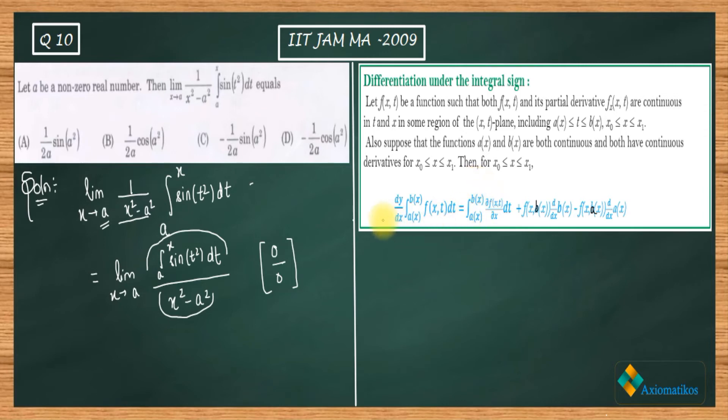Let me show you that Leibniz rule. What it says: let f(x,t) be a function such that both f(x,t) and its partial derivative are continuous in t and x in some region of the x-t plane. Also suppose that the functions a(x) and b(x) are continuous and have continuous derivatives, then this rule will be followed. I should write this rule again because there was a mistake in writing.